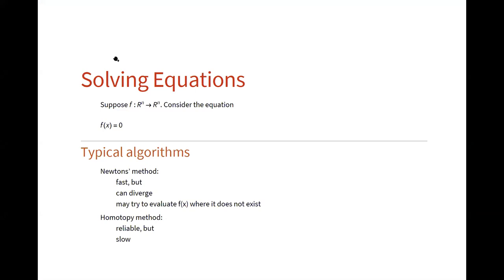One reason there isn't a lot of software to solve nonlinear equations is that the best methods for doing that are buried within nonlinear optimization solvers. If you're solving a constrained optimization problem where some constraints are equalities, you've got to solve out those equations as part of the bigger problem. Newton's method is fast, but it may blow up and go where the objective function doesn't exist. Homotopy methods are reliable but slow.